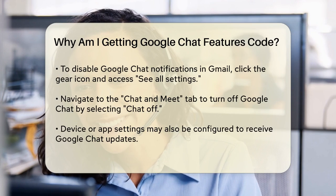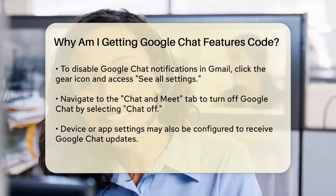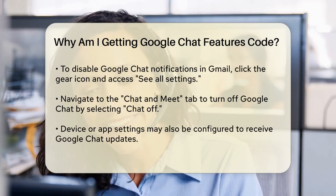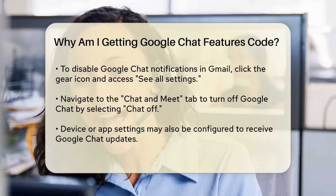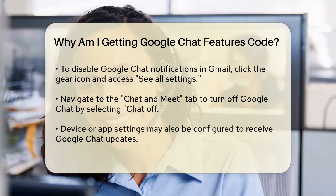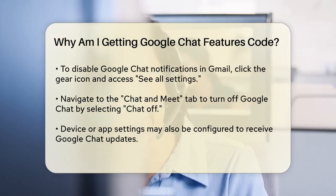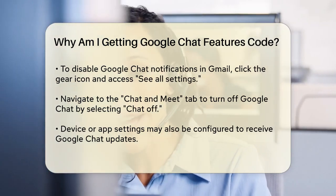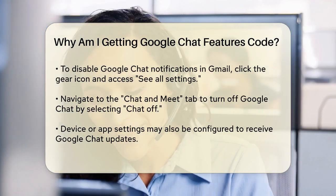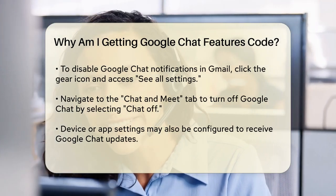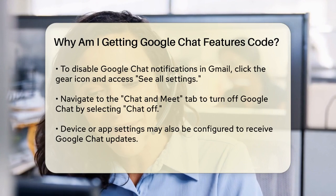Here's how you can do it. Click on the gear icon in the top right corner of your Gmail, select See All Settings, then go to the Chat and Meet tab. From there, you can select Chat Off to deactivate Google Chat. This will stop the constant reminders about chat features.